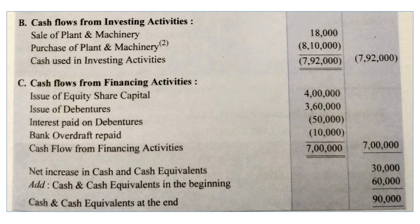B: Cash flows from investing activities. Sale of plant and machinery — rupees 18,000. Purchase of plant and machinery (from working note 2) — rupees 8,10,000. Cash used in investing activities — subtracting these gives a net amount of rupees 7,92,000.